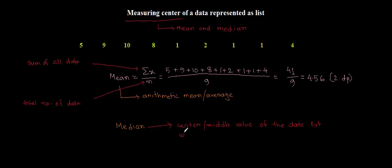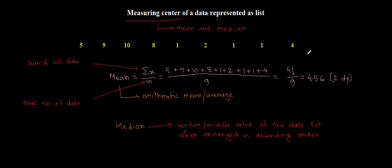The median is the middle value when the data is arranged in ascending order. If you look at the list I have written, it is not arranged in ascending order. So before I can calculate the median, I have to rewrite the list in ascending order.